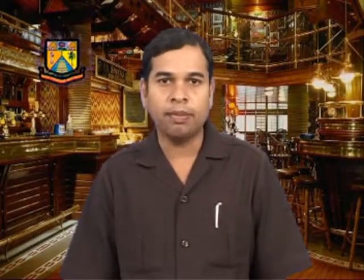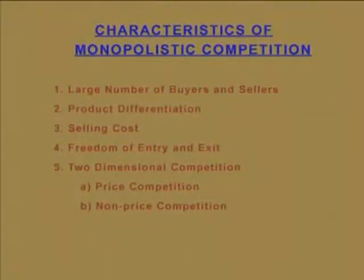Monopolistic competition, which was popularized by E. Chamberlain, is one type of imperfect competition. This type of market has the element of monopoly and competition, of which competition predominates. The various features of monopolistic competition are: number one, large number of buyers and sellers; number two, product differentiation; number three, selling cost; number four, free entry and exit of firms; and number five, two-dimensional competition.